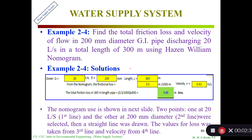Now we'll solve Example 2-4. Find the total friction loss and velocity of flow in a 200 millimeter diameter GI pipe, galvanized iron pipe, discharging 20 liters per second in a total length of 300 meters using Hazen-William Nomogram. The Hazen-William Nomogram is the older method; people used to use it. It has an equation and a nomogram.